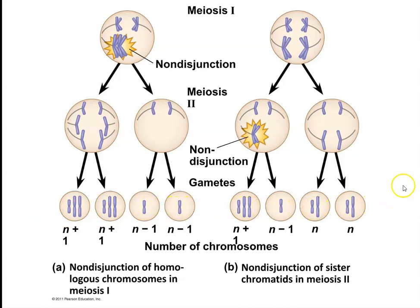If nondisjunction happens during meiosis II, which is less often but can still happen, then 50% of the gametes would have the wrong number and 50% would be normal. It is just statistical which of the gametes ends up being the one that gets fertilized and results in the baby.